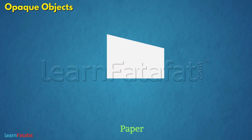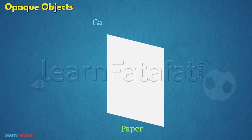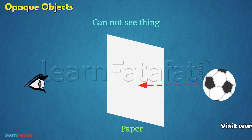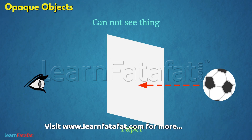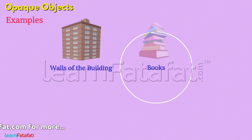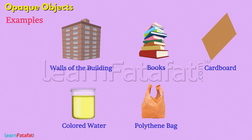Some objects such as paper do not allow light to pass through them, because of which we cannot see things through them. These objects are called opaque objects. For example: walls of a building, books, cardboard, colored water, opaque polythene bags, plastic materials, etc.